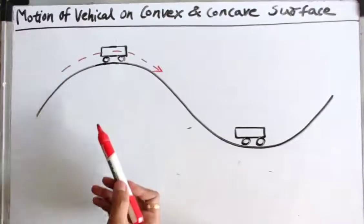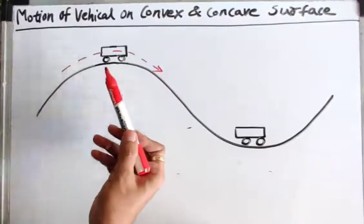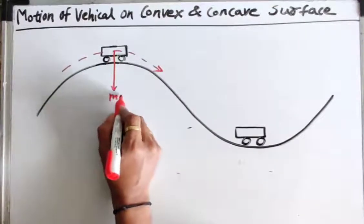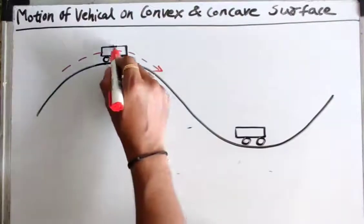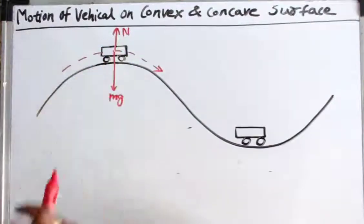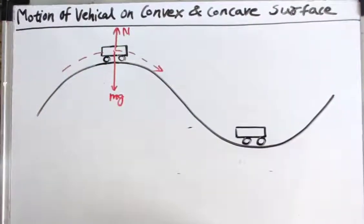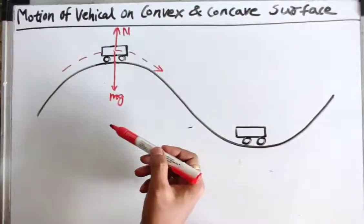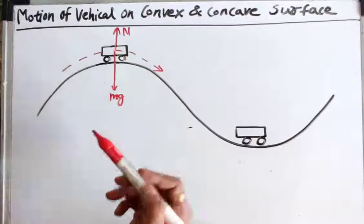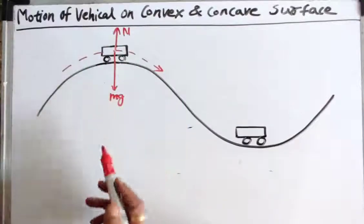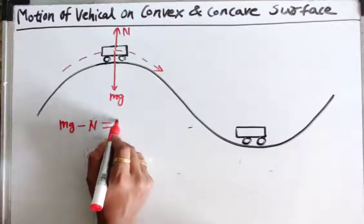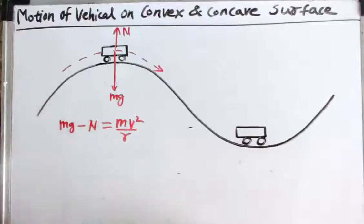At this position, the forces acting on the vehicle are: the first force is its weight mg, which is acting vertically downwards, and the normal reaction n between the road and the vehicle is acting in the upward direction. The resultant of these two forces gives the necessary centripetal force, which acts in the downward direction. So we can write: mg minus n is equal to mv² upon r.